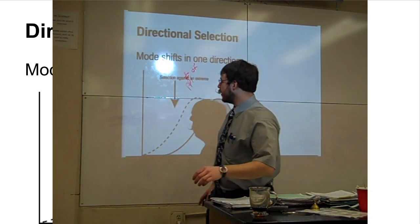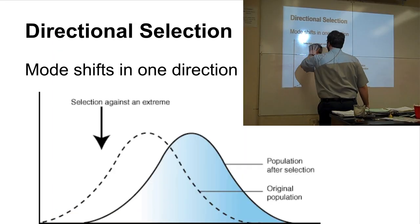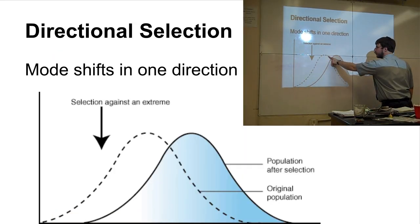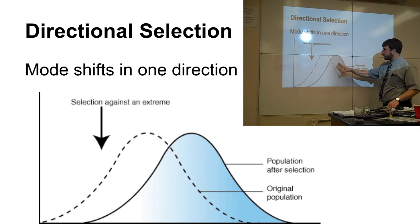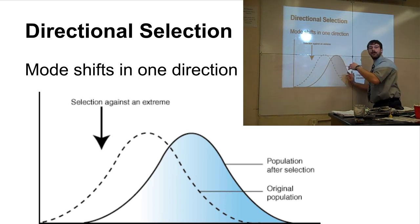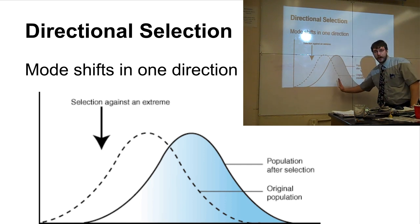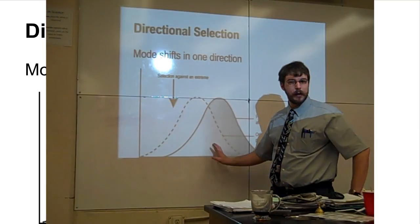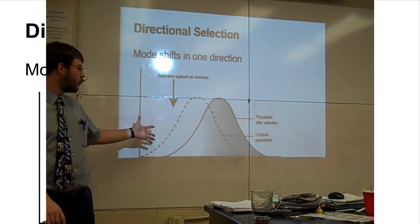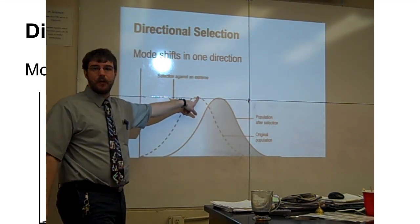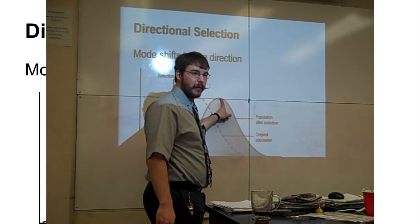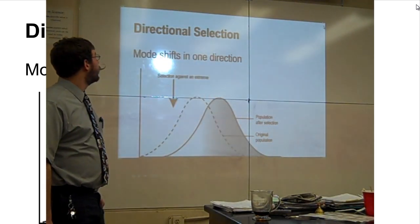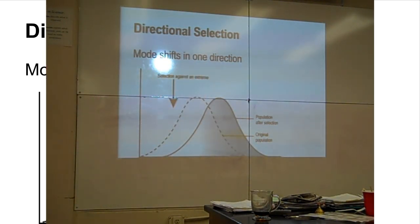With directional selection, the mode shifts in one direction. The dotted line represents the original population for a given trait, and after selection happens — like when Ariel goes back the next season to collect more lizards — most lizards are now at the shifted position, with fewer at the original. It could shift in either direction. Human height is a good example: people over the generations have been getting taller. The average height for a man used to be around 5'4"; now it's shifted up. That's directional selection.